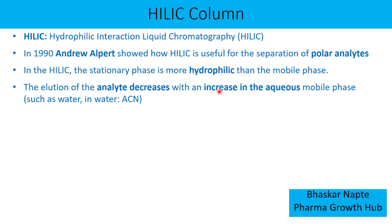The important difference is this: the elution of the analyte decreases with an increase in the aqueous mobile phase such as water. In normal phase liquid chromatography, mobile phases contain water-immiscible solvents like dichloromethane and hexane, ethyl acetate and hexane, or chloroform and n-hexane. But in HILIC mode, you can actually use water-miscible organic solvents and even water in the mobile phase, which is not typical in normal phase liquid chromatography.